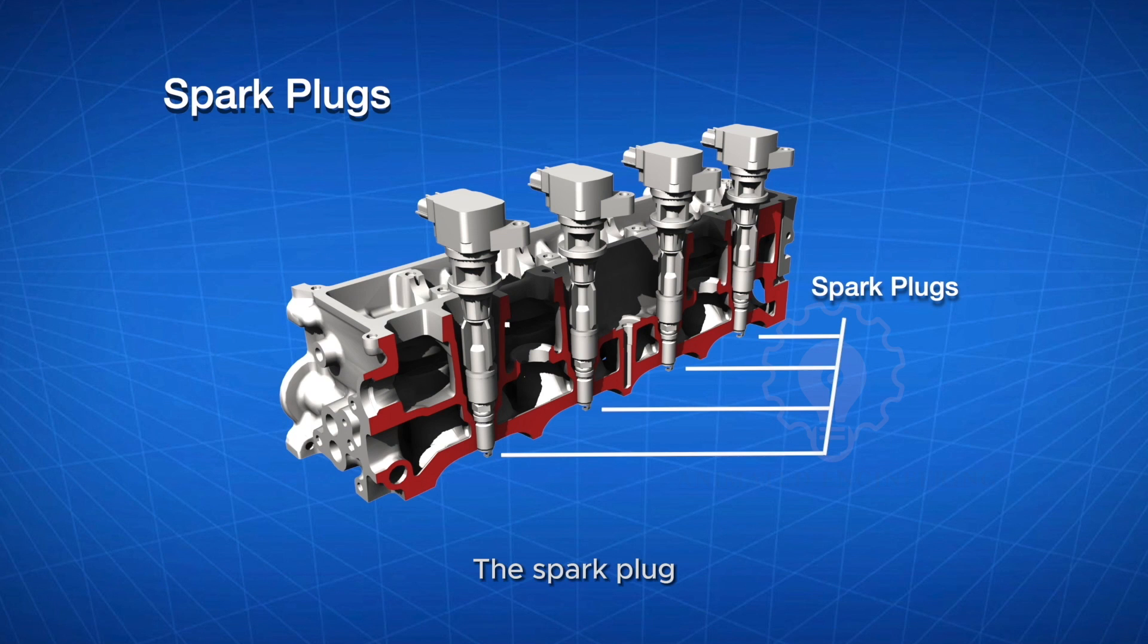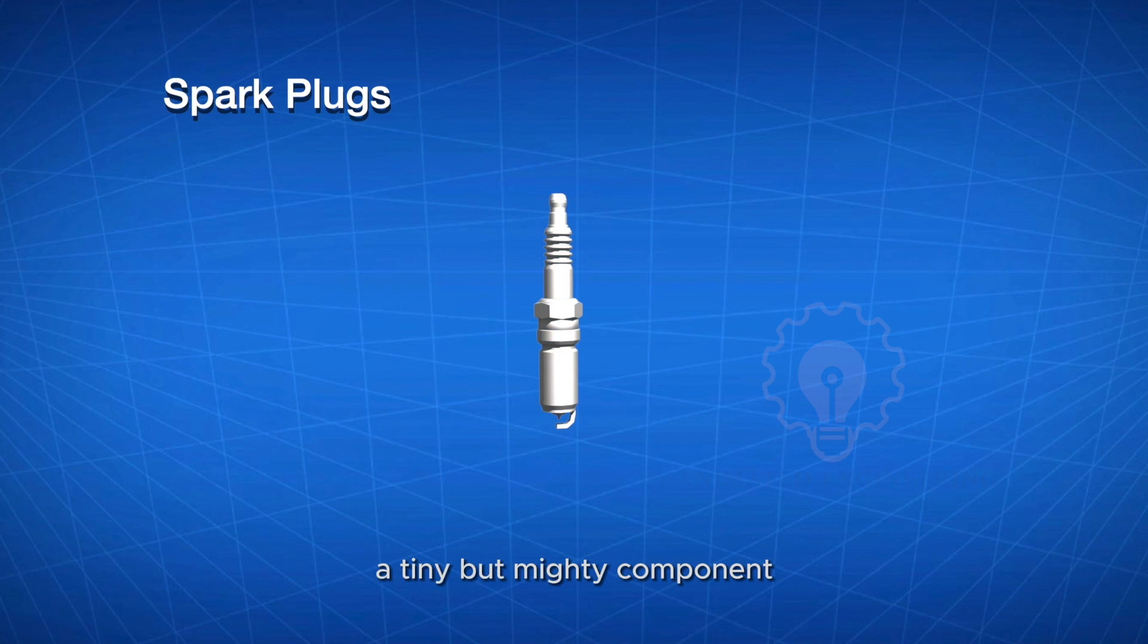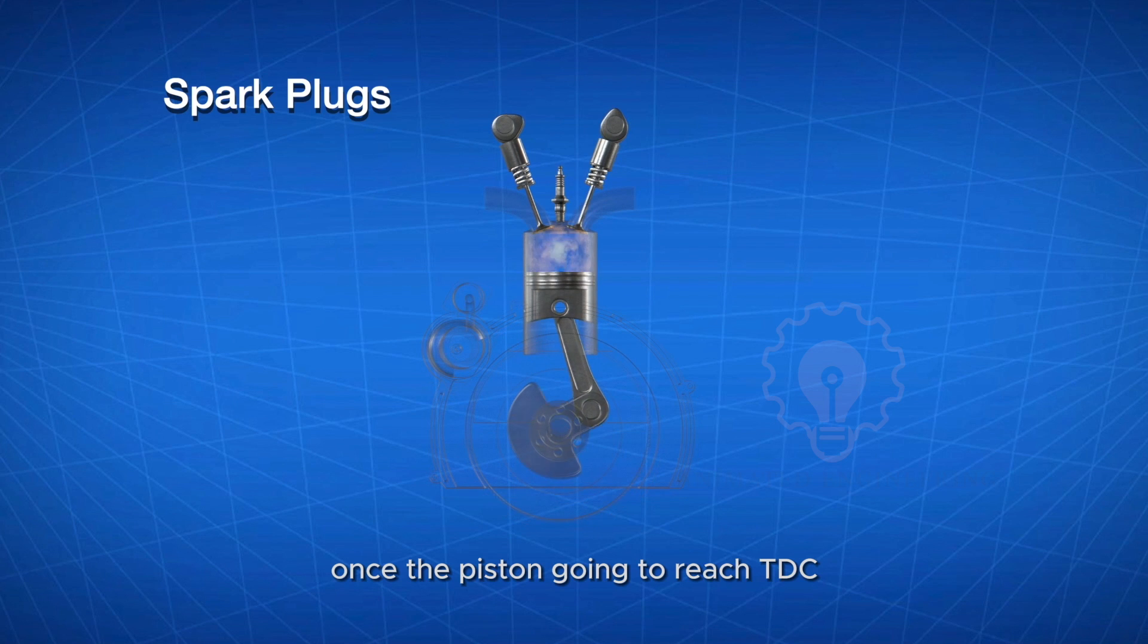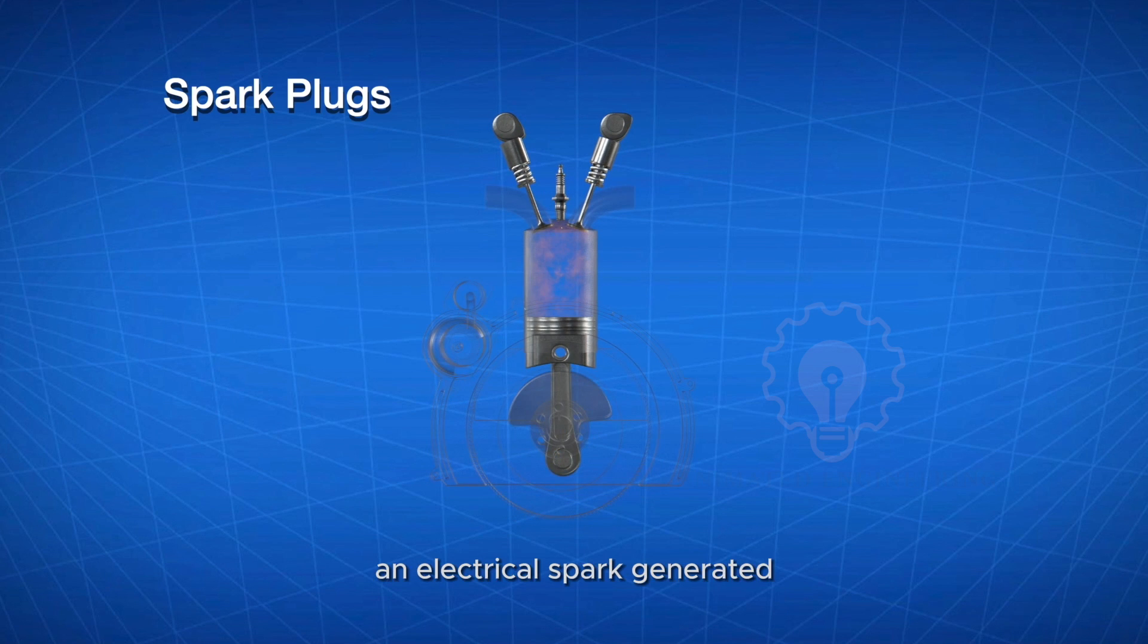Spark plugs: The spark plug, a tiny but mighty component, serves as the ignition source for the fuel in the combustion chamber. During a compression stroke, once the piston is going to reach TDC, an electrical spark generated using a spark plug is used to ignite the compressed air-fuel mixture to produce energy.